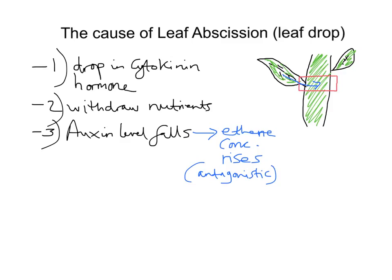High levels of ethene in the leaf stimulate the production of what's called cellulase enzymes — the '-ase' ending usually means it's an enzyme. High levels of ethene stimulate production of these cellulase enzymes in what's called the abscission zone of the petiole. The petiole is the small stem connecting the leaf to the main stem, and the cellulase enzymes digest the petiole so that the leaf drops.